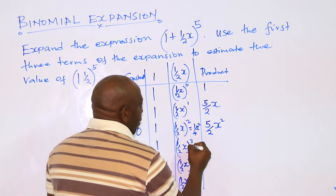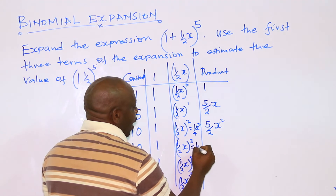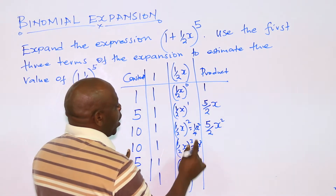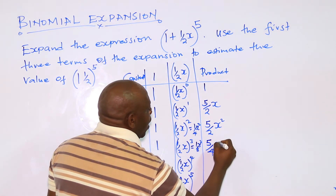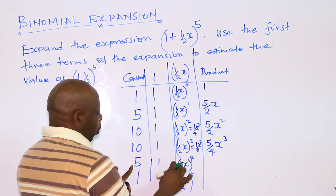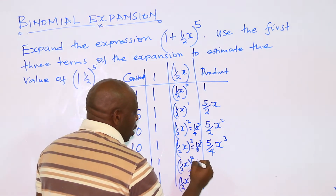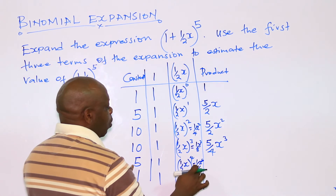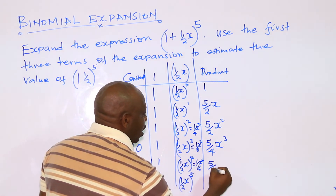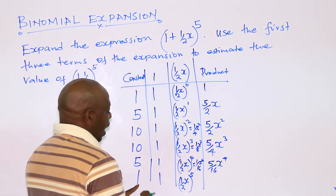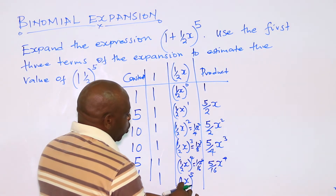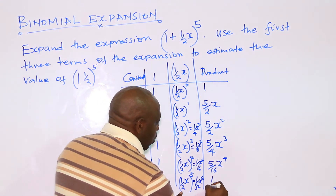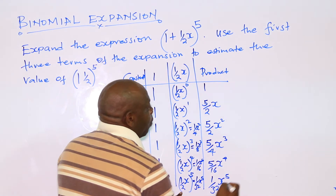This row: (½x)³ = 1/8 x³, so 10 × 1 × 1/8, dividing gives 5/4 x³. The next one: (½x)⁴ = 1/16 x⁴, so 5 × 1 × 1/16 = 5/16 x⁴. And the last one: 1 × 1 × (½x)⁵ — since (½)⁵ = 1/32 — gives 1/32 x⁵.